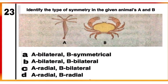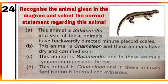Question 23: Identify the types of symmetry in the given animals A and B. A is Hydra with radial symmetry, belonging to phylum Coelenterata. B is crab having bilateral symmetry, belonging to phylum Arthropoda. Mark C as the correct answer.